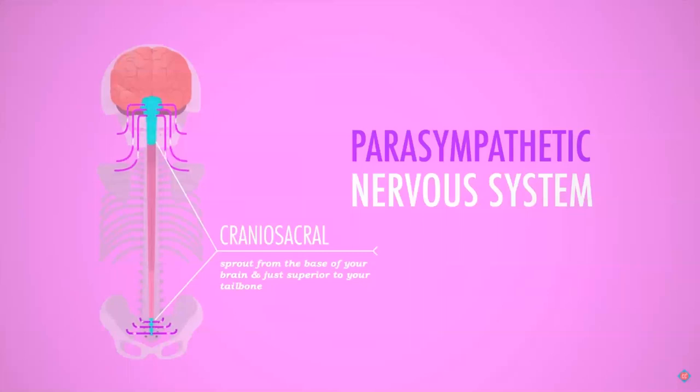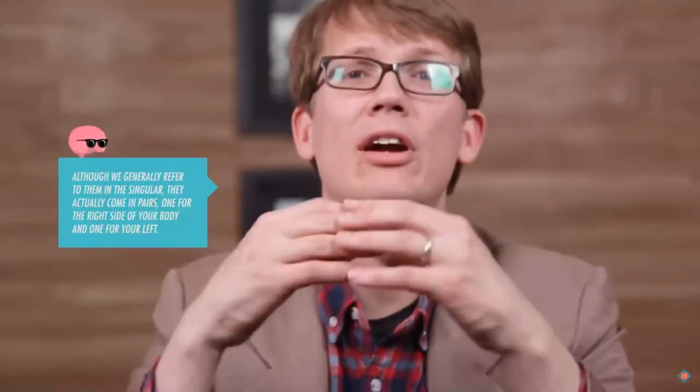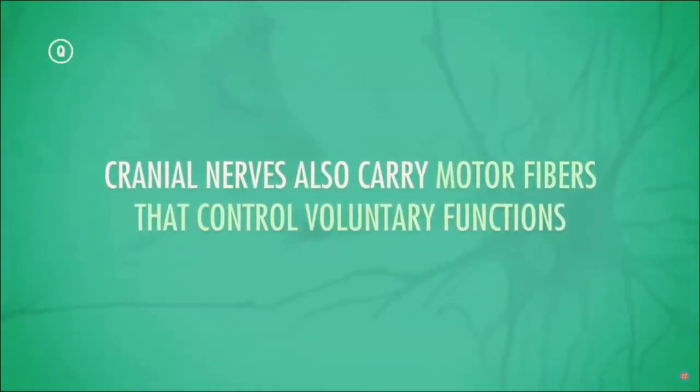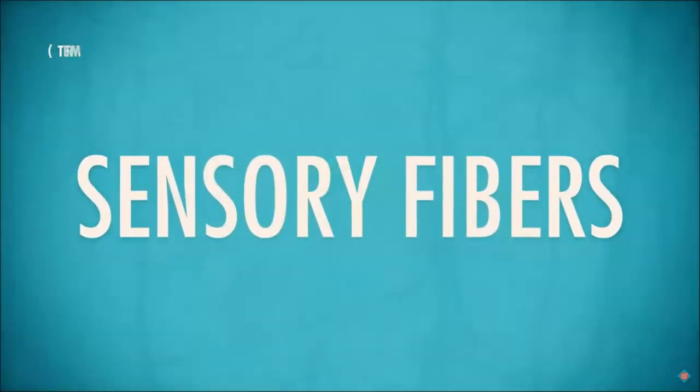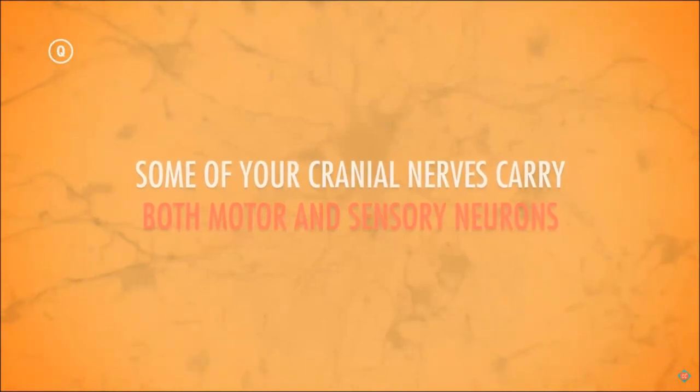With the exception of a few sacral nerves near the tailbone that run to the bladder, genitals, and rectum, most parasympathetic nerves run right from the brain almost all the way to their effectors. There are 12 cranial nerves, and they vary in terms of what kinds of neurons they contain. Not all are autonomic motor fibers — some carry motor fibers that control voluntary functions like moving your eyeballs, and others carry only sensory fibers. Some carry both motor and sensory neurons.